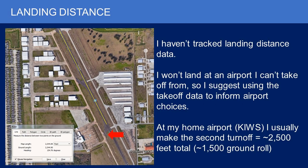As for landing distance, I haven't specifically tracked landing distance data as a dataset. My personal minimum is around 3,000 to 4,000 feet, so I won't land at an airport I can't take off from. At my home airport, West Houston, I usually make the second turnoff — about 2,500 feet from the threshold. With trees across the ditch on the golf course to the north, I'm coming over the threshold at 30 to 40 feet and still manage to turn off about 2,500 feet down, which fits within my 3,000 to 4,000 foot personal minimum.